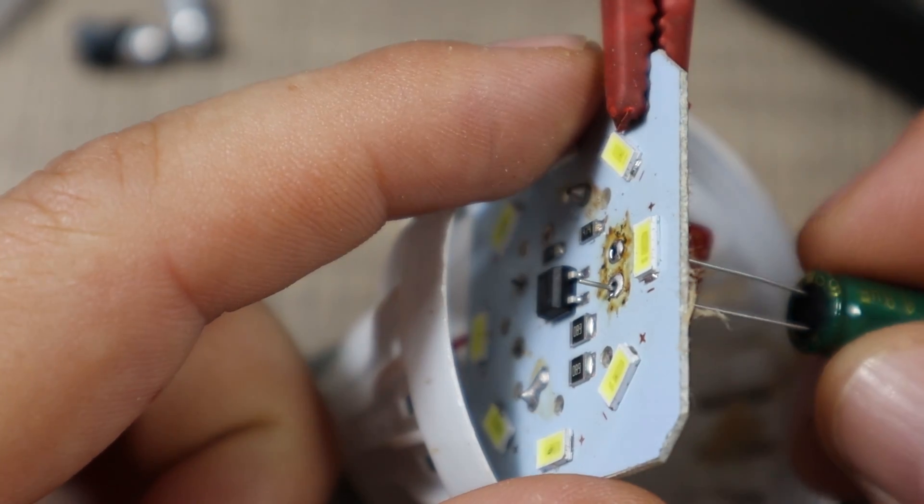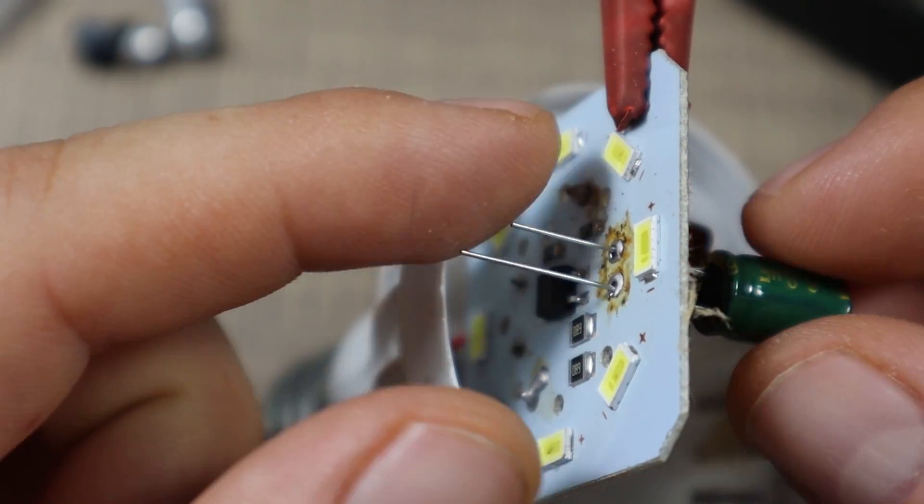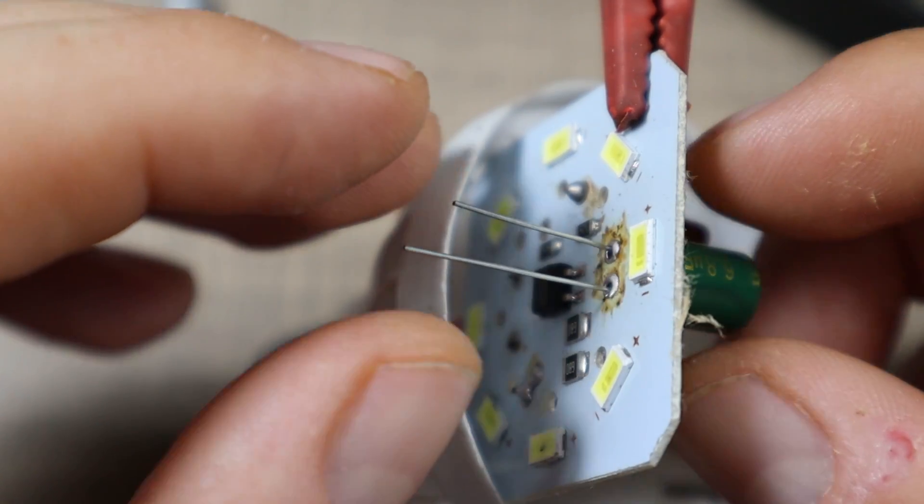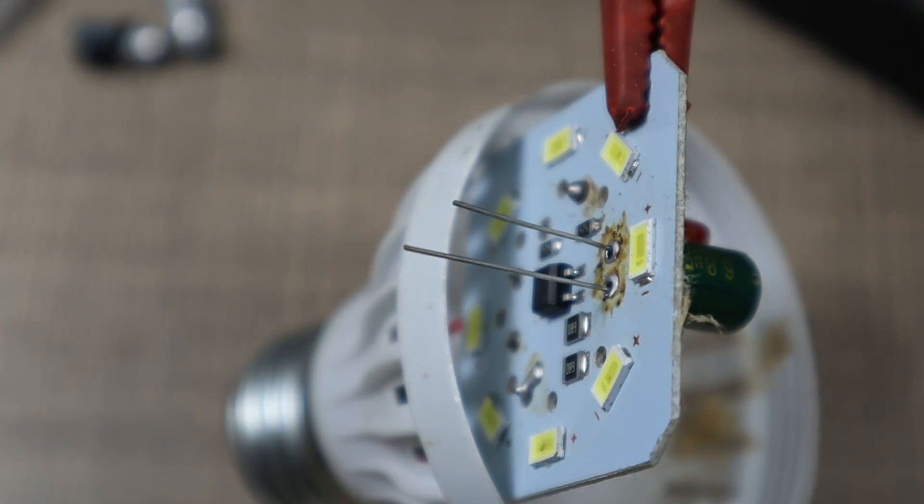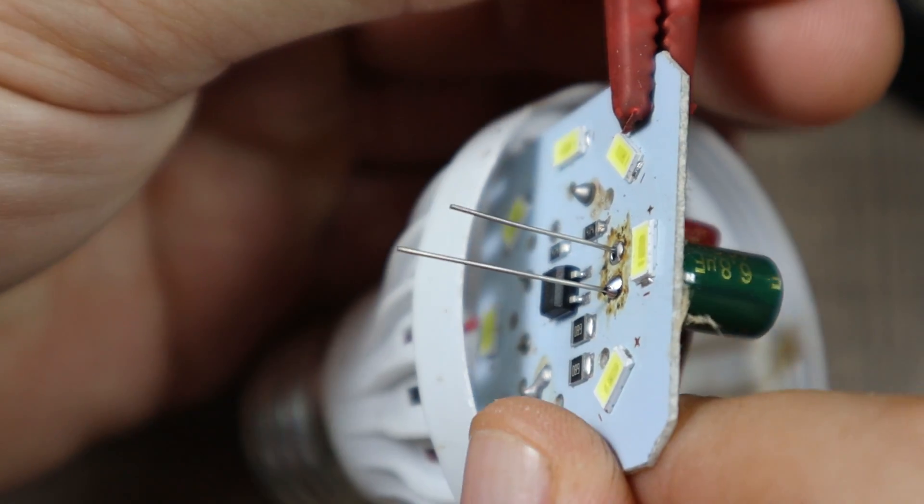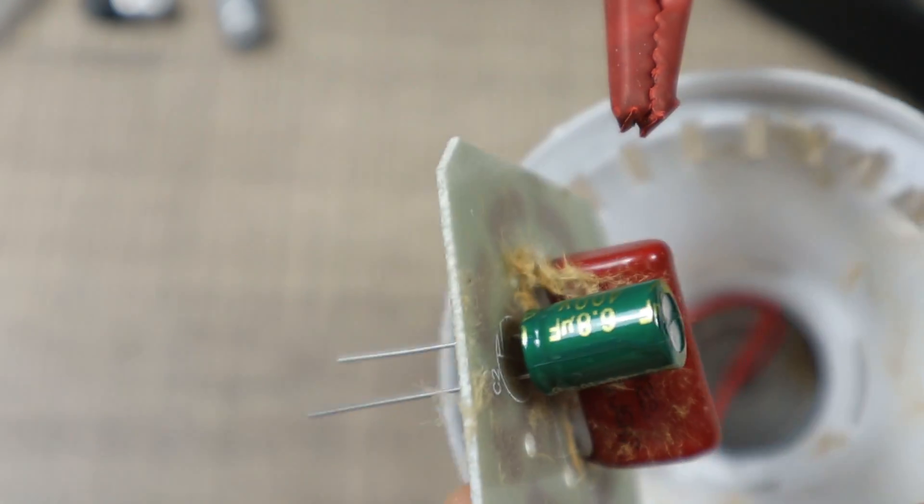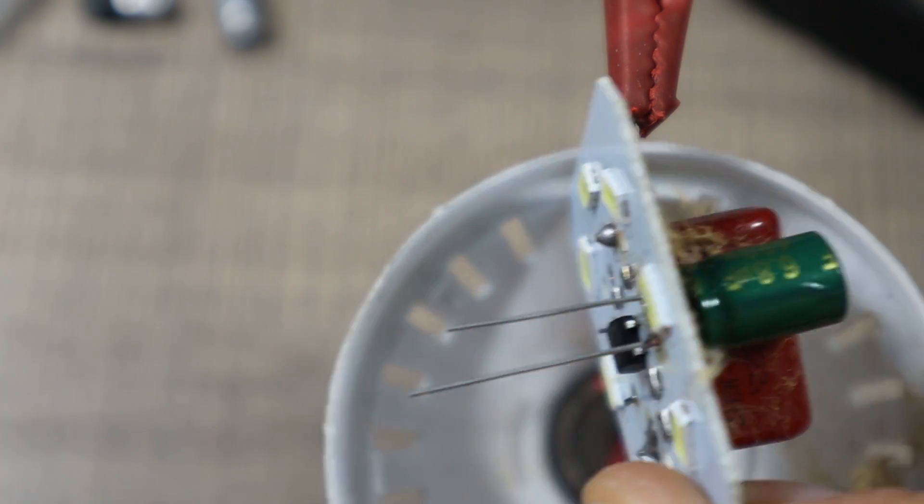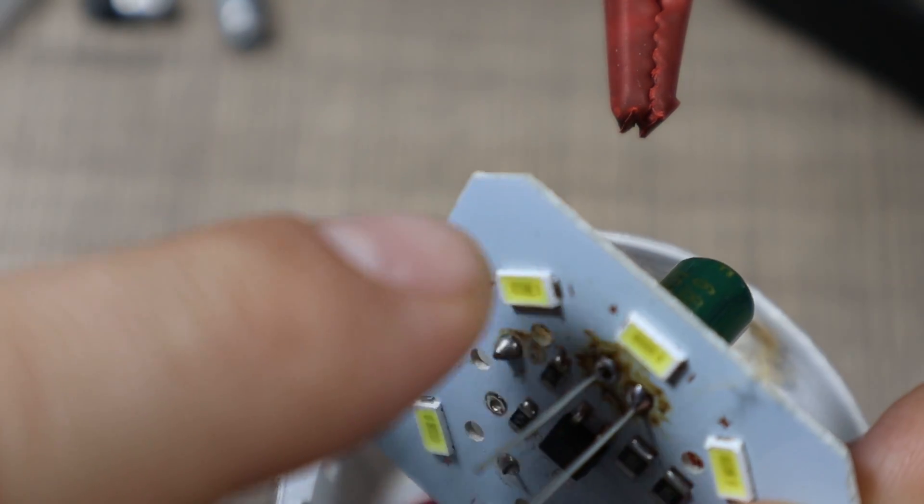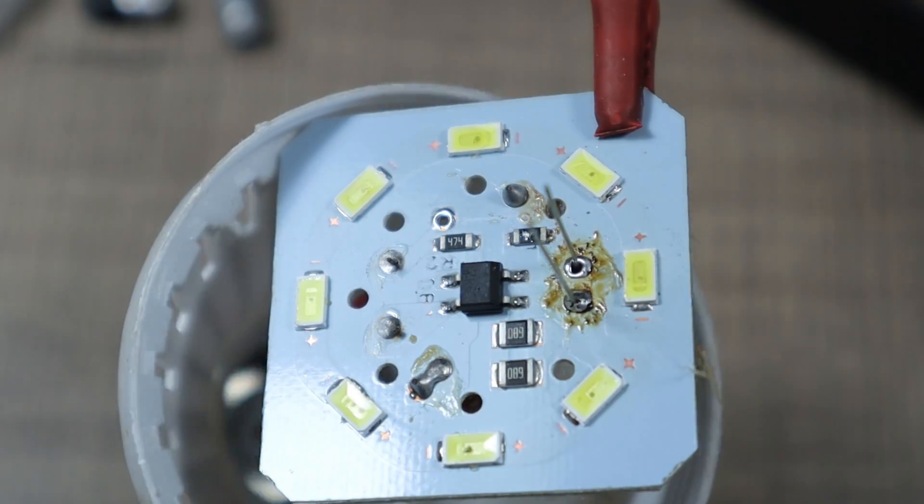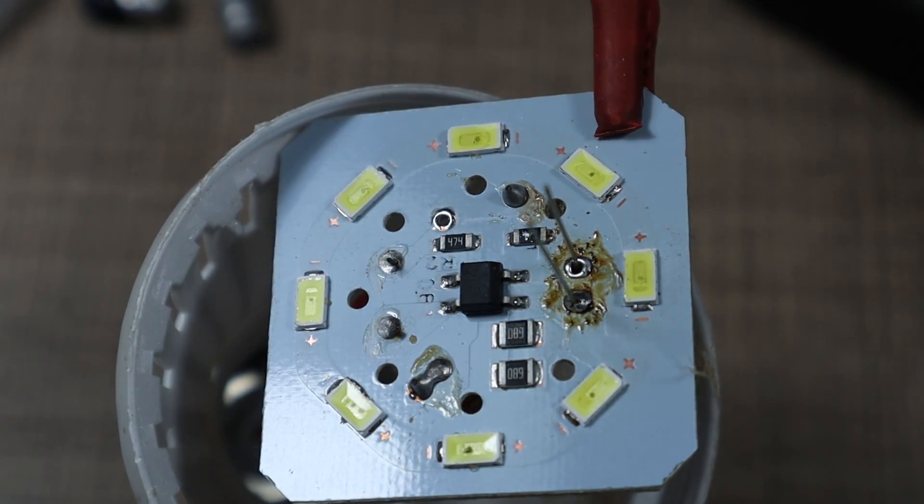To prevent excess heat getting at the capacitor, I'm gonna leave it a bit away from the PCB. Let's solder one of the legs first so we can align it properly. You can see there's a bit of a gap between the PCB and the capacitor. Hopefully that should prevent excessive heat being transferred to it. Let's now solder the other legs.